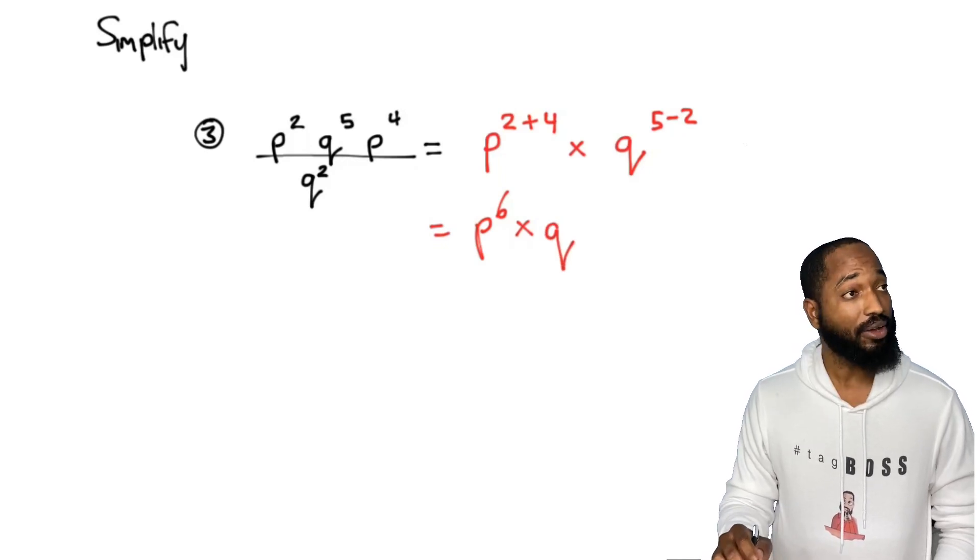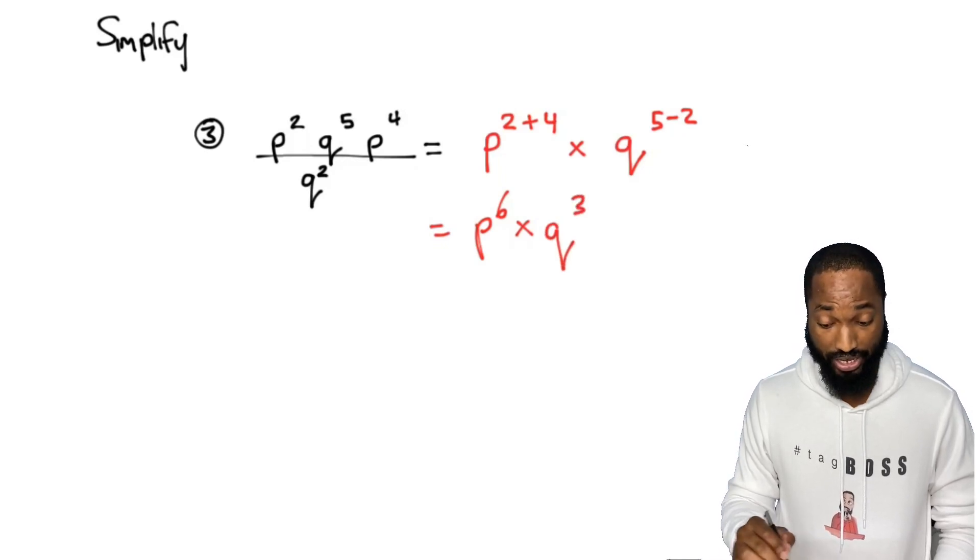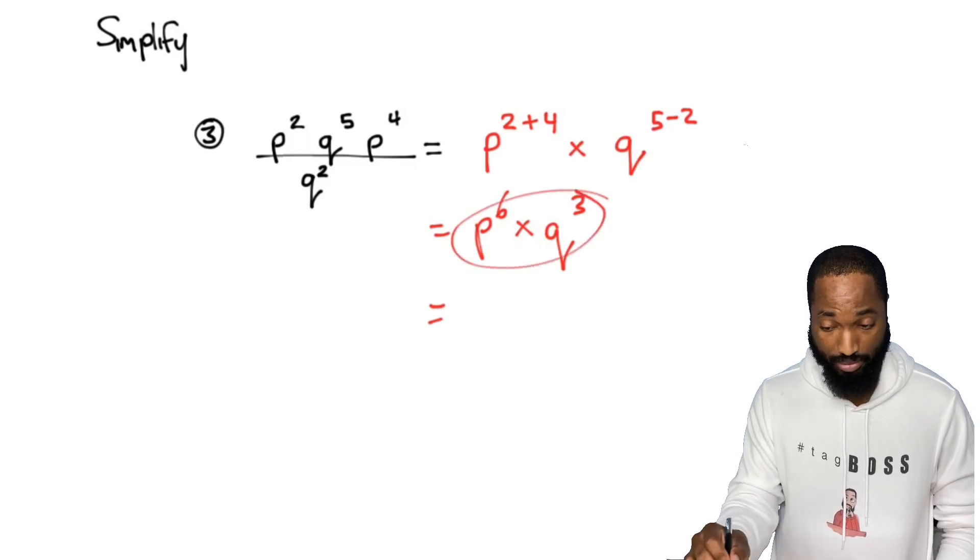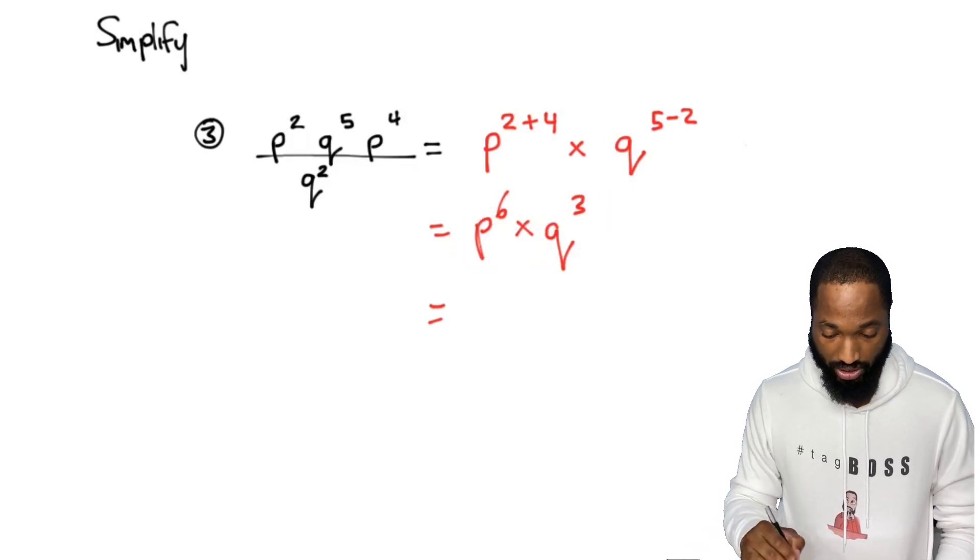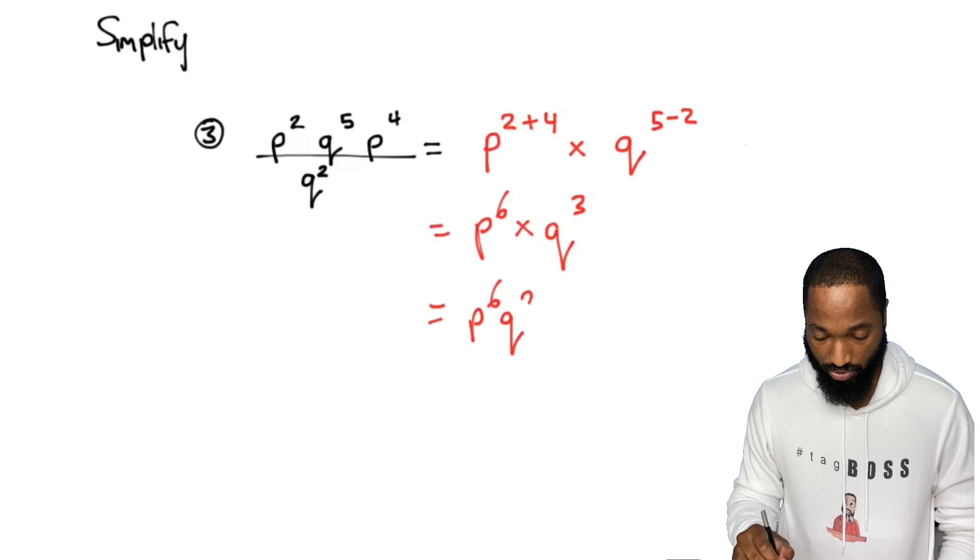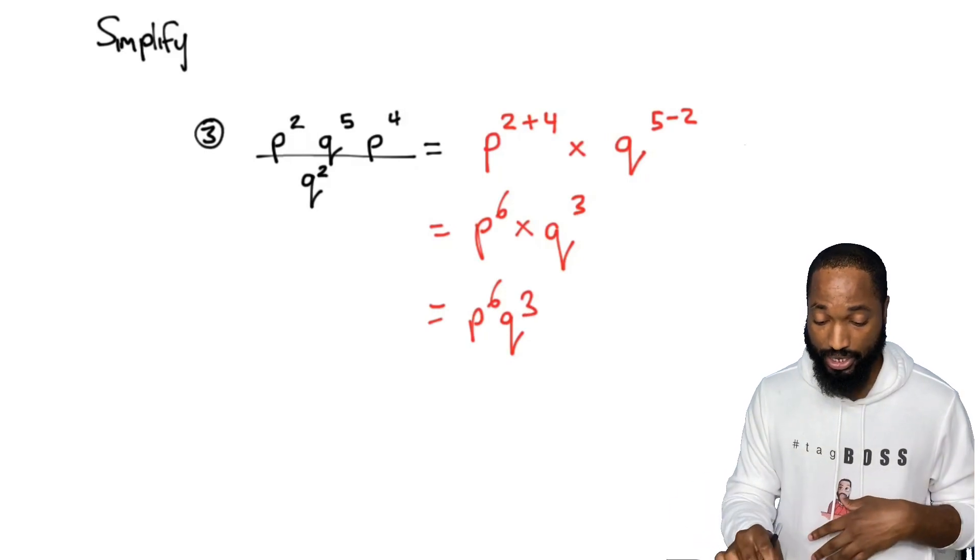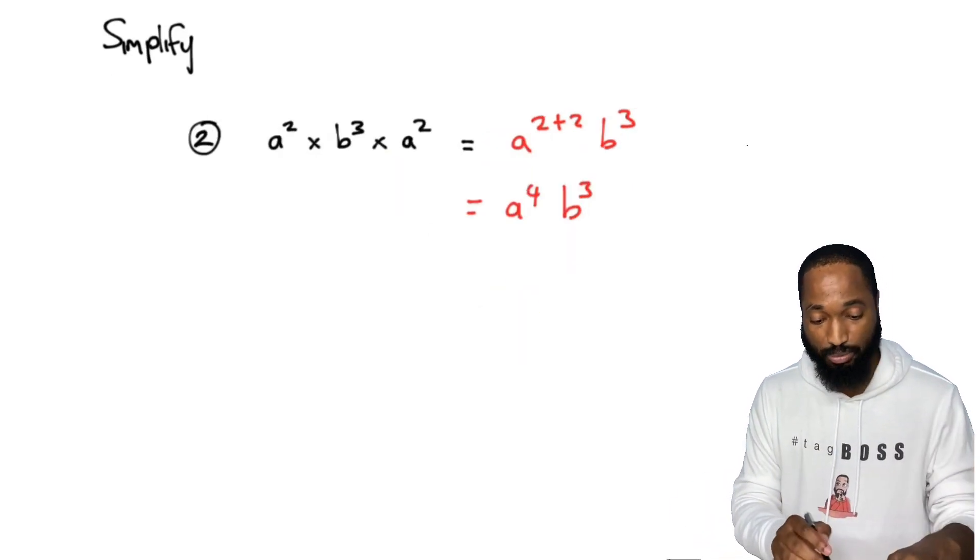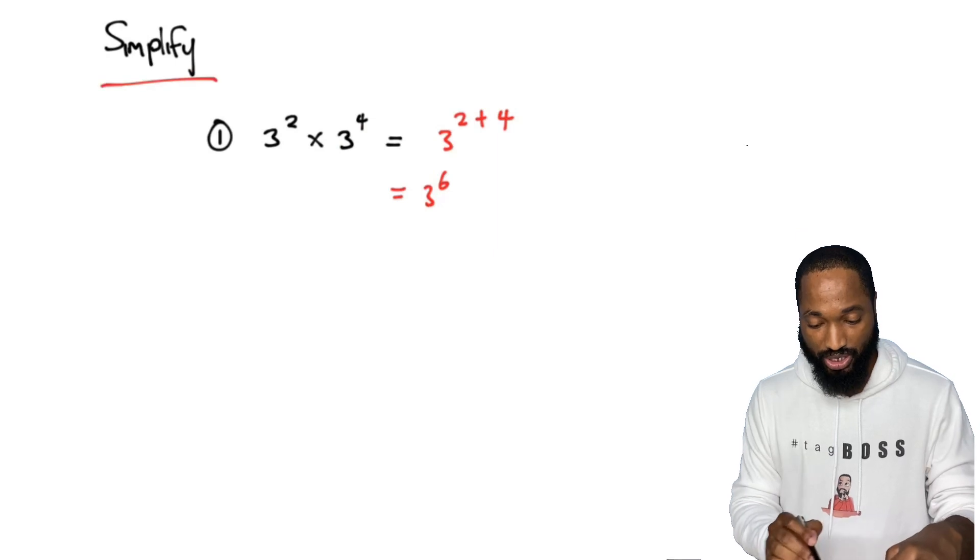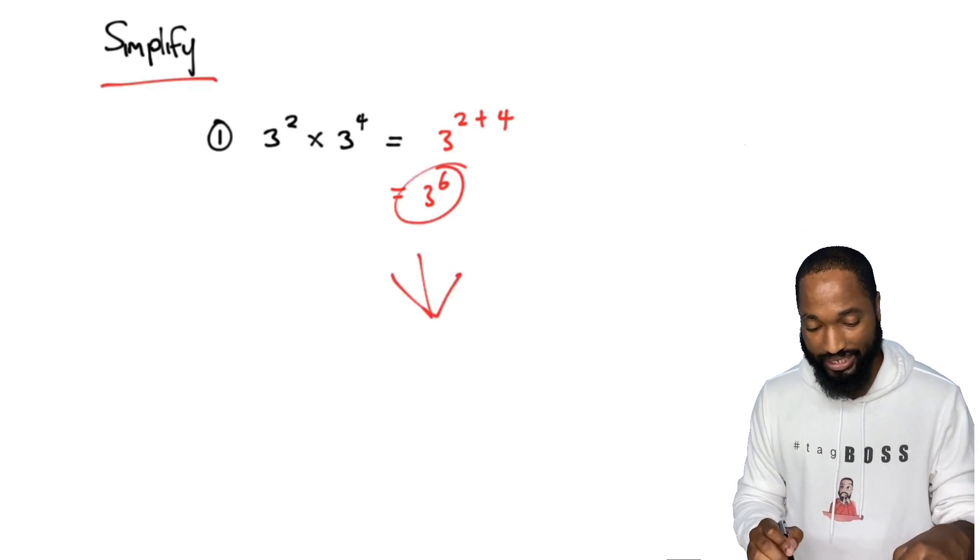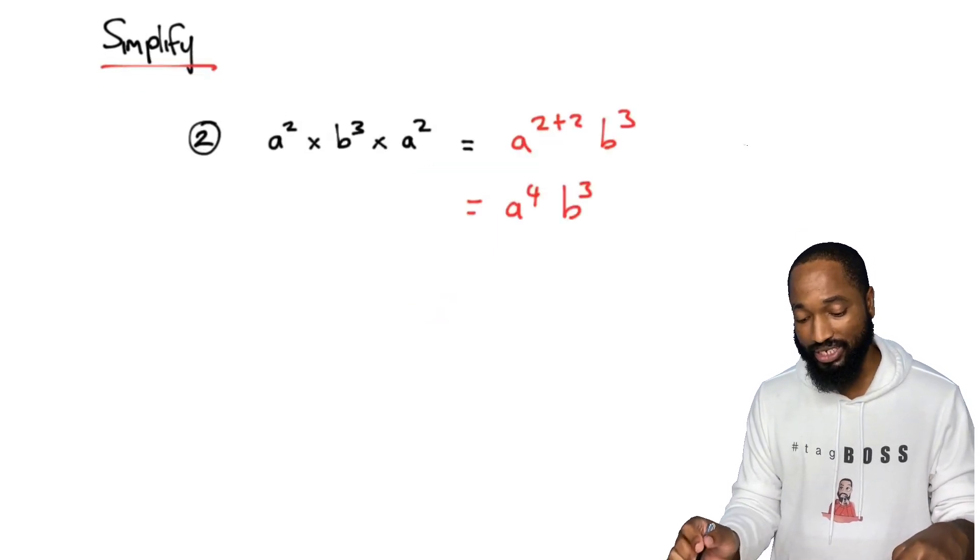So this is p to the power of six multiply by q to the power of five take away two, which is three. Don't do anything here because you have different bases, so just write p six q three, call that george, be happy.